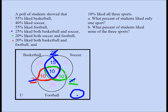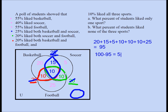To find the remaining region, I add all the numbers accounted for: 20 plus 15 plus 15 plus 5 plus 10 plus 10 plus 10 plus 25 equals 95. So I've addressed 95% of the students. Subtracting from 100 gives 5 — so 5% goes in the 'none' region. Therefore, 5% of students liked none of the three sports. The answer to part B is 5.